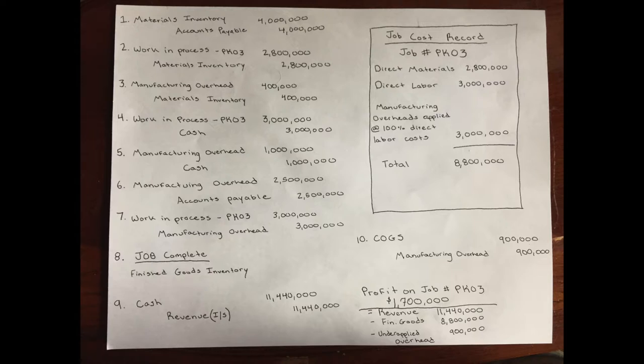For number six, other indirect costs yet to be paid total $2.5 million. Manufacturing overheads are debited for $2.5 million and accounts payable is credited $2.5 million. For number seven, manufacturing overheads are charged to the jobs at 100% of direct labor costs. This is the predetermined manufacturing overhead application rate. 100% of the $3 million direct labor costs are applied to work in process job number PK03, and manufacturing overheads are credited $3 million.